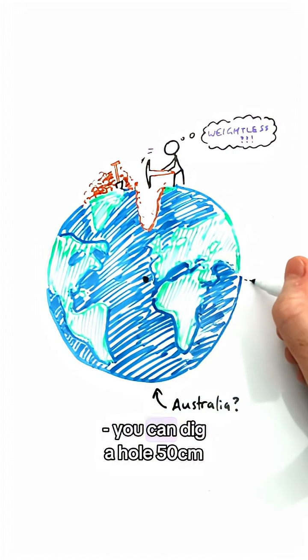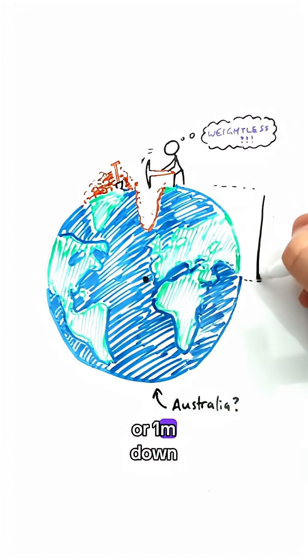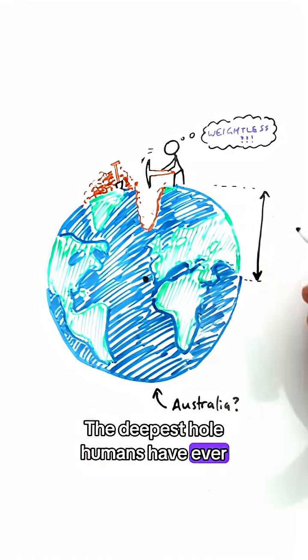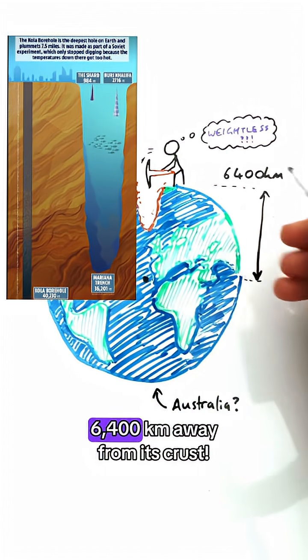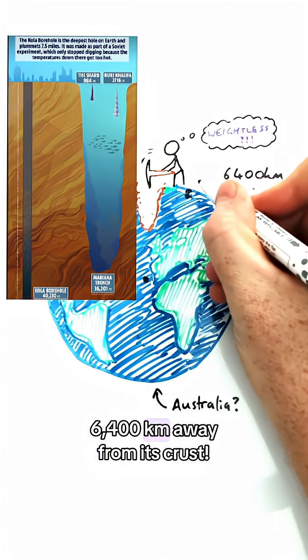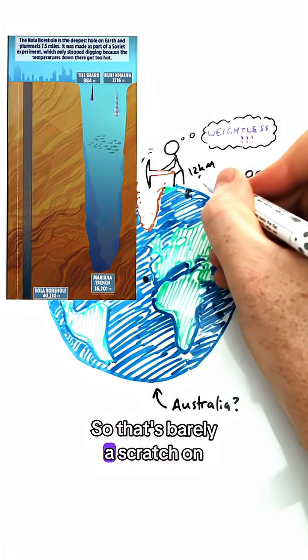Let's imagine you're at the beach. You can dig a hole 50 centimeters, one meter down. The deepest hole humans have ever dug is only 12 kilometers. The center of the earth is 6,400 kilometers away from its crust, so that's barely a scratch on the surface.